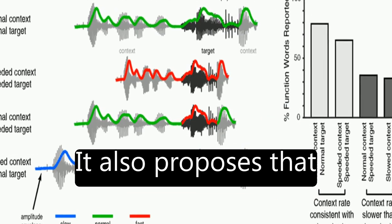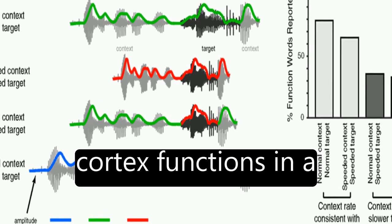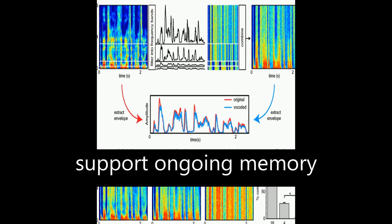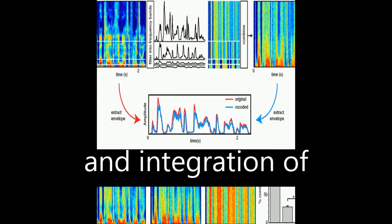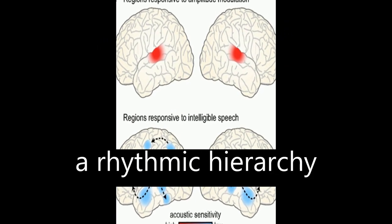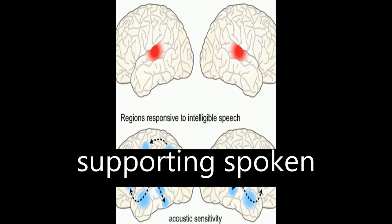It also proposes that lateral anterior temporal cortex functions in a domain-general fashion to support ongoing memory and integration of meaningful input, forming the foundation of a rhythmic hierarchy supporting spoken language.